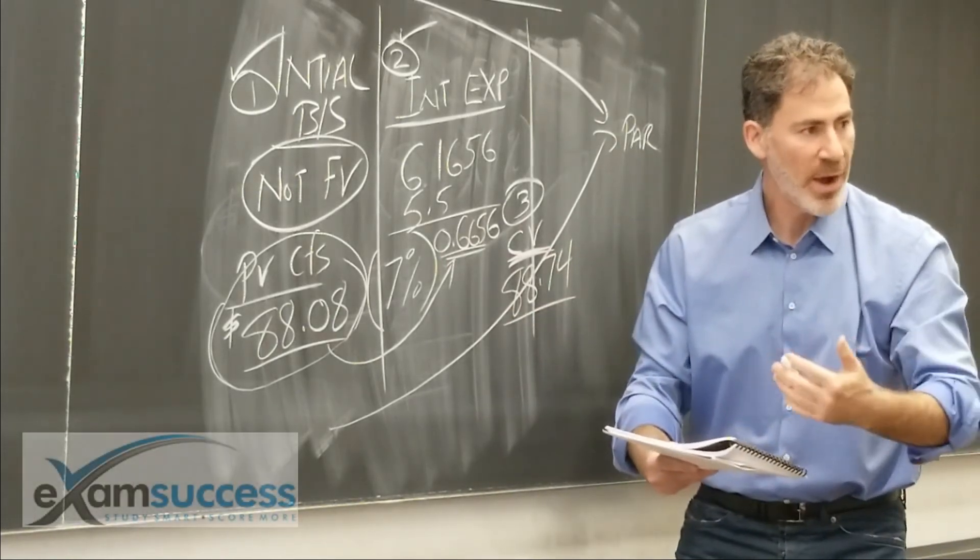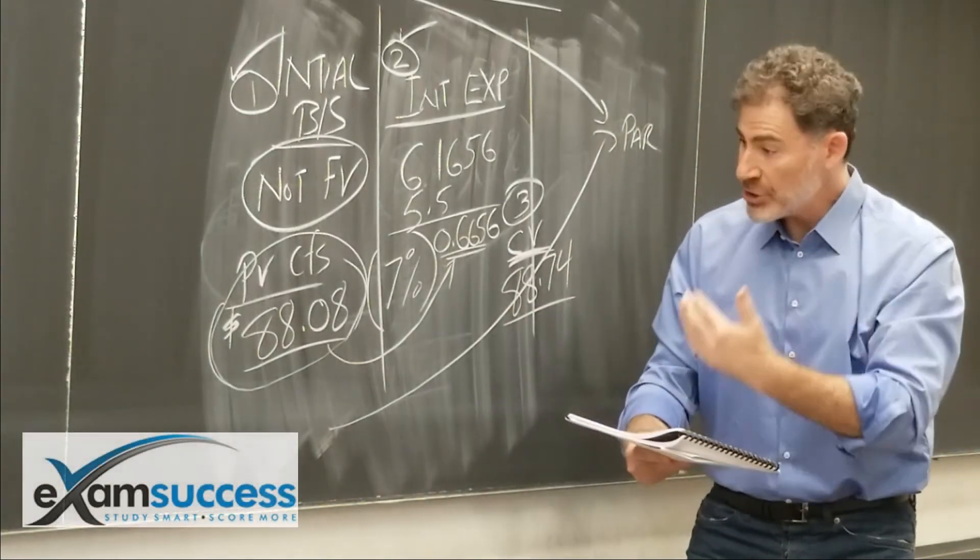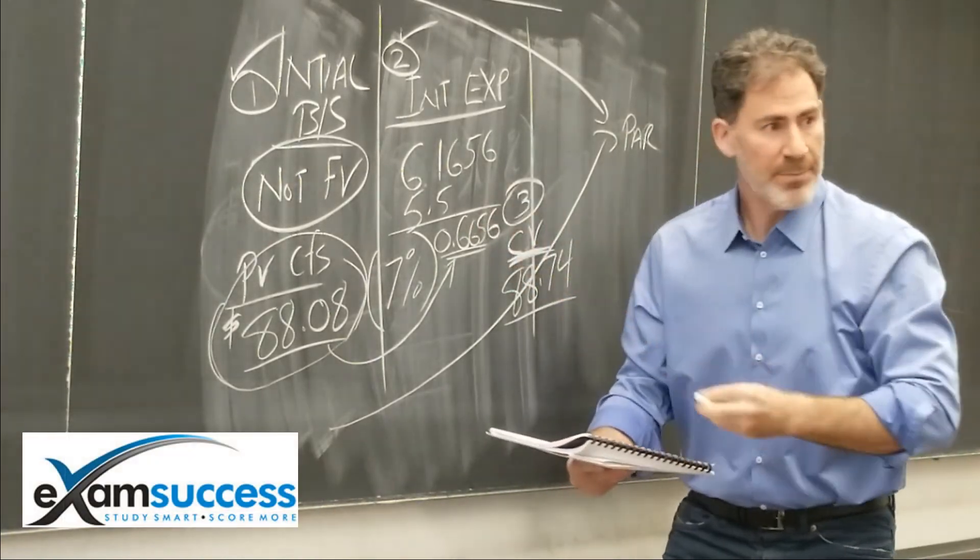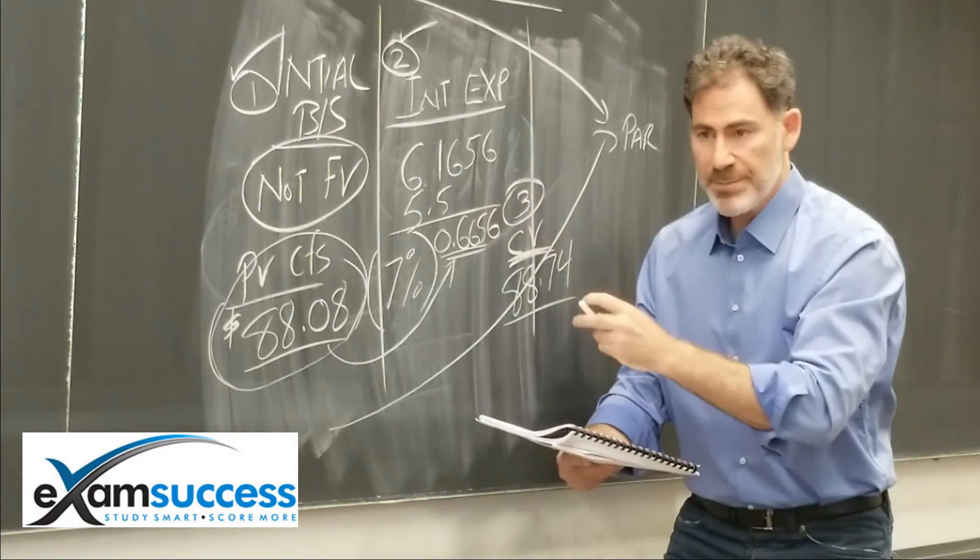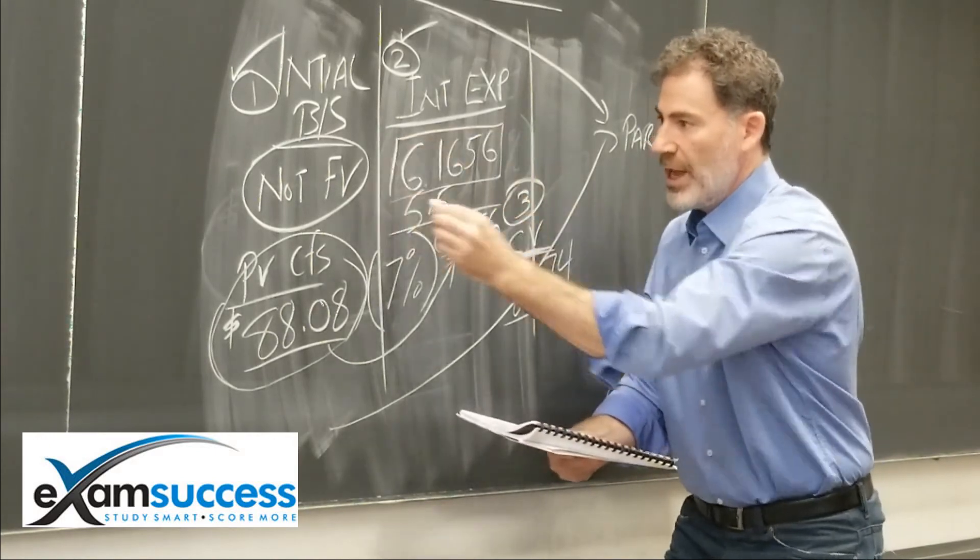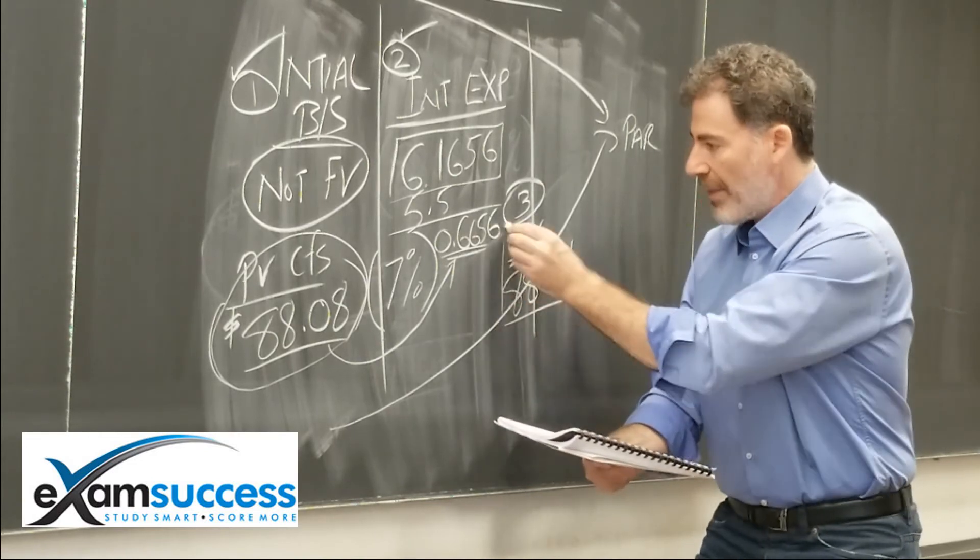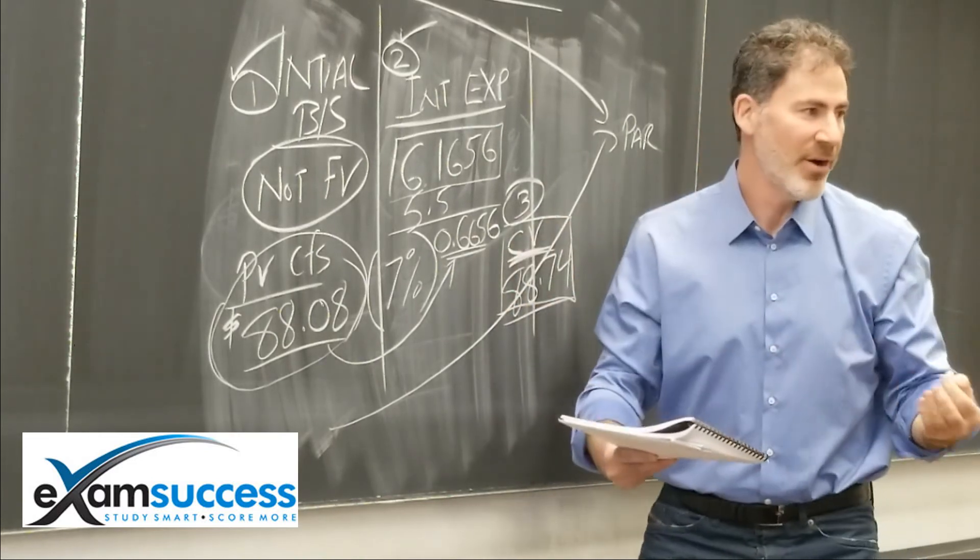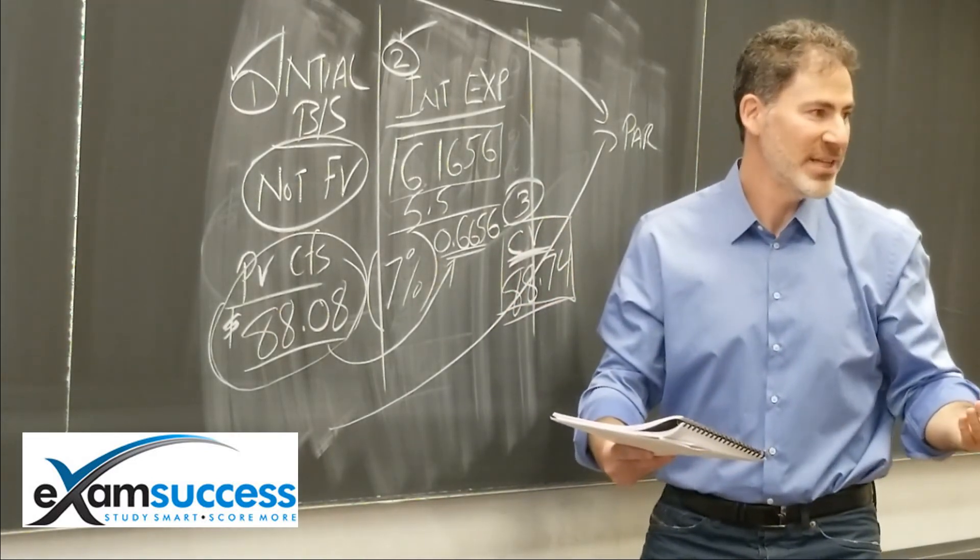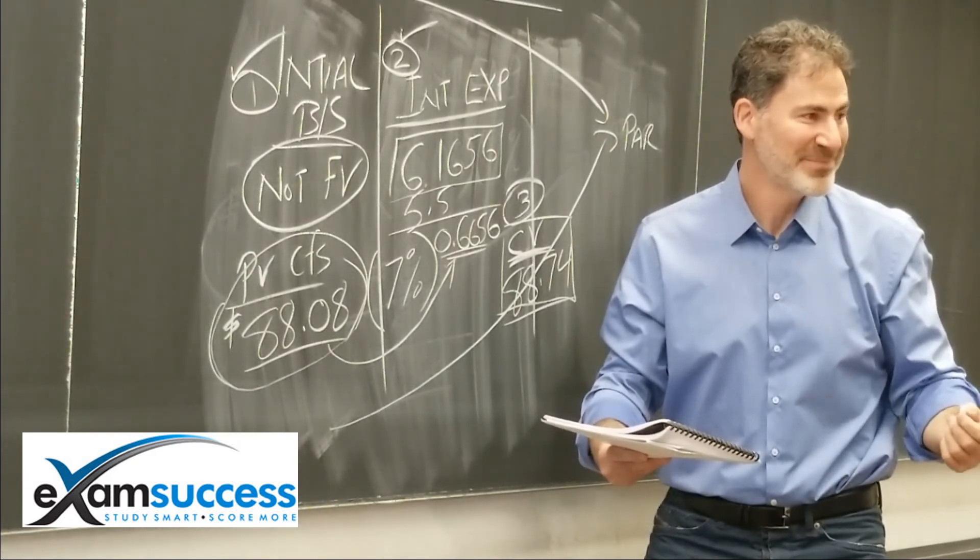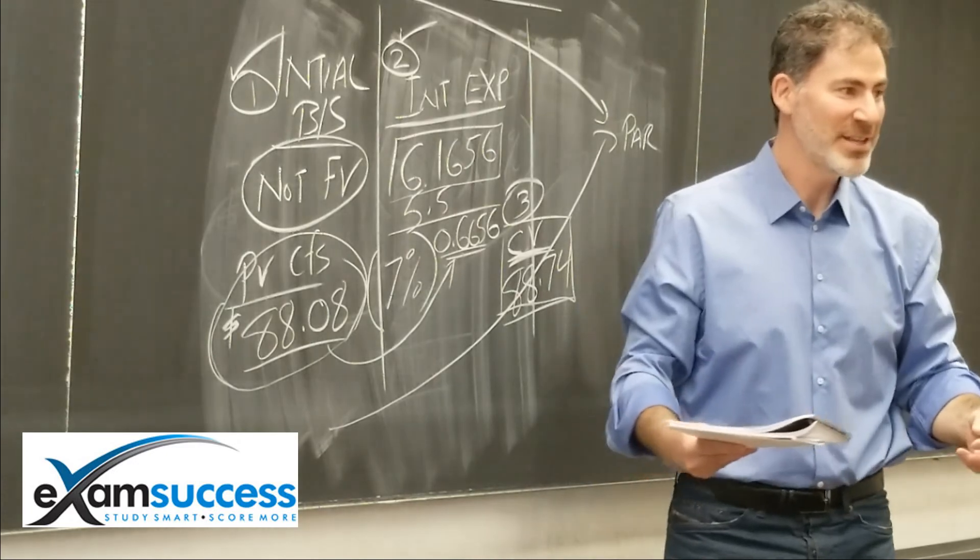So there's three potential exam questions here. The initial liability, the interest expense, which is reported on the income statement, and the carrying value at the end of the year. There it is. Now, we just need to get another 157 more marks to pass. Great. Okay, so we're on to the next.